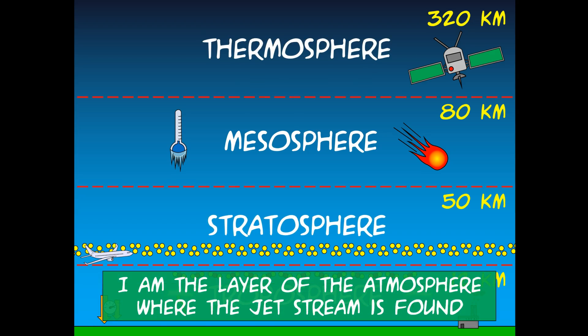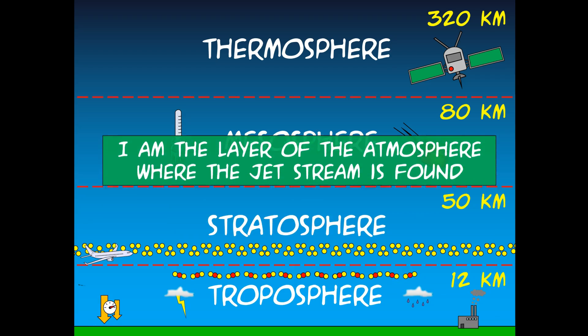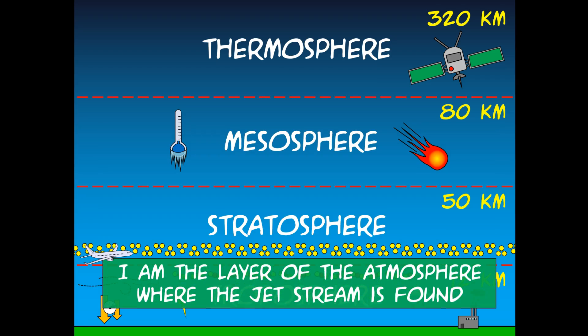This is the layer of the atmosphere where the jet stream is found. The jet stream is a major air current that travels around the northern hemisphere and is one of the most important factors in causing weather and climate on our planet. So what layer is that found in? That would be the troposphere. I hope that you guessed the troposphere because even though the jet stream is above what we normally feel, it is also a form of weather and the troposphere is where we find weather.